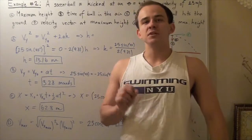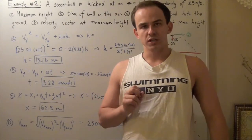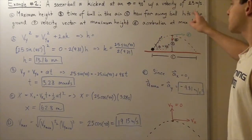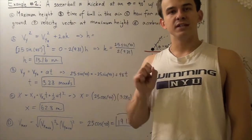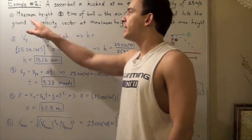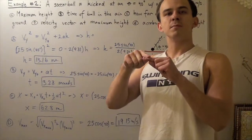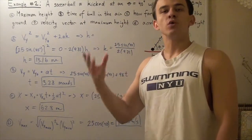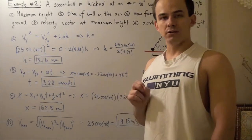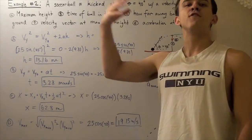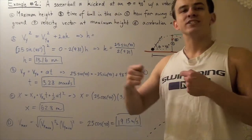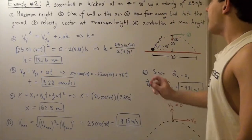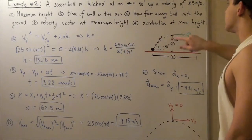Let's look at Example 2, which deals with projectile motion. A soccer ball is kicked at an angle of 40 degrees at a velocity of 25 meters per second. We want to find five things: A) the maximum height the ball reaches, B) the total time the ball spent in the air, C) the total horizontal displacement, D) the velocity vector at maximum height, and E) the acceleration vector at maximum height.